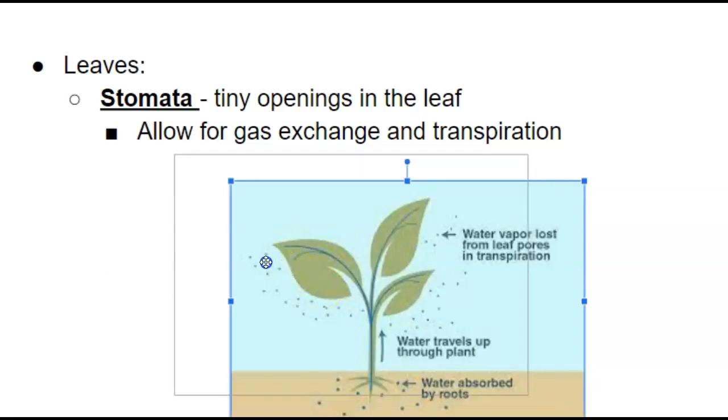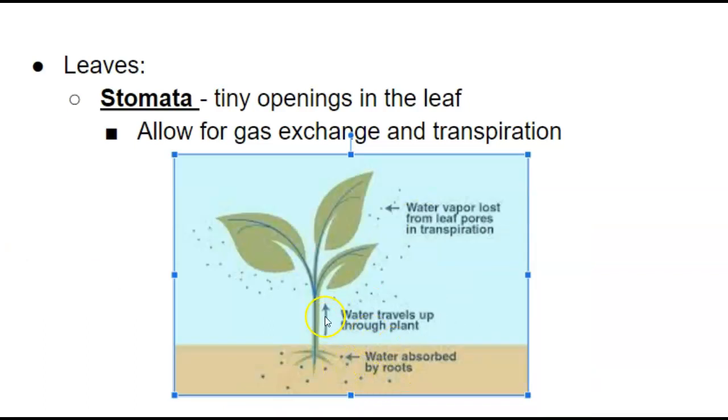So in this picture here, we've got the water being absorbed by the roots. It's traveling up the plant. Remember that transpiration is pulling that water up through the plant. And this can be good and bad. So it helps get water up through the plant, but we're also losing some, which as a plant, you got to wait for rain in order to get more water.